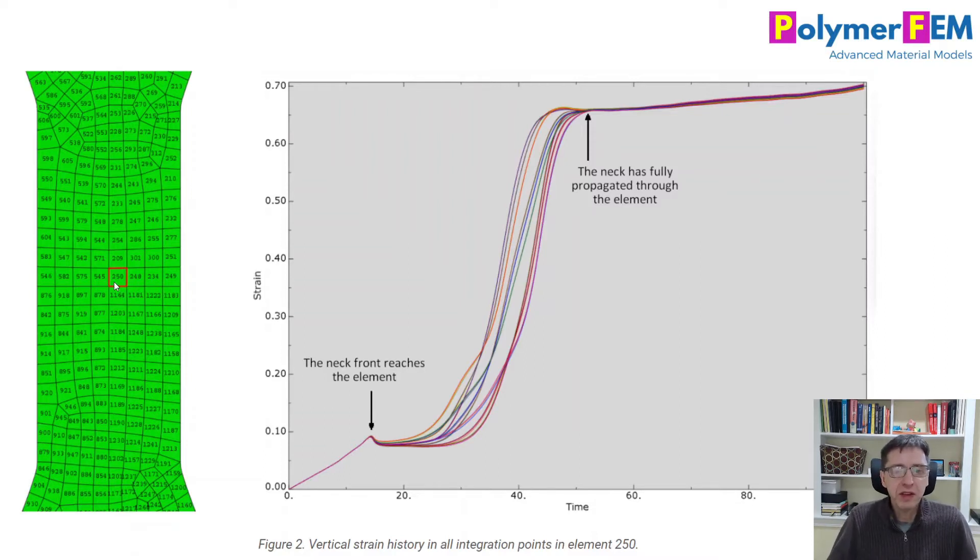I'm picking one of the elements in the middle. It's element 250, it turns out to be. This is a quadratic element, so it has three times three times three, equal to 27 integration points. I'm extracting the strain at all of these integration points as a function of time.